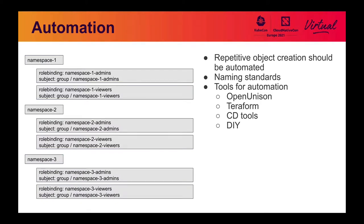Number two in your toolbox: automation. Everything's API driven, so you want to automate, automate, automate. Whatever's repetitive, go ahead and automate it. This gives you the ability to have naming standards. Lots of tools to do this — OpenUnison, our open source project, is what I'm going to show in the demo, but Terraform, continuous delivery tools, or do-it-yourself approaches all work. You can see here we've got three namespaces, each namespace gets a couple of role bindings, it goes to groups, everything is consistent, and you as a human are not building this stuff.